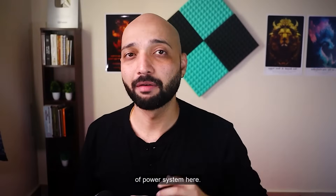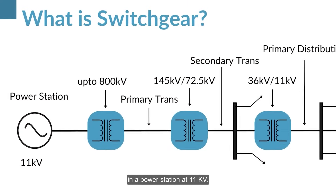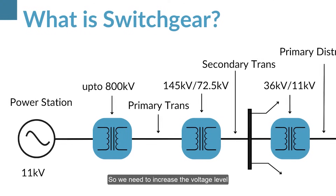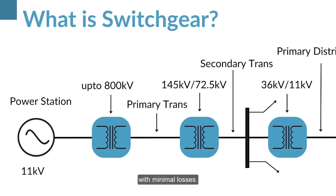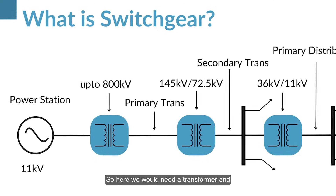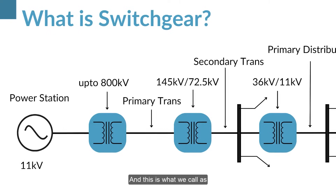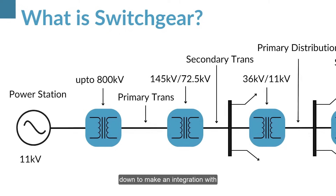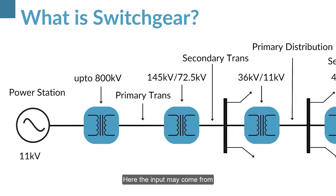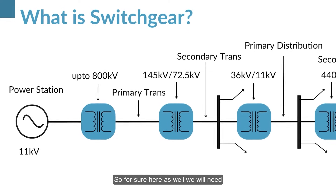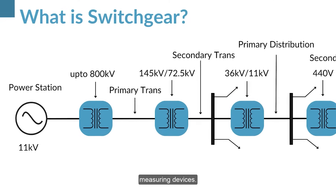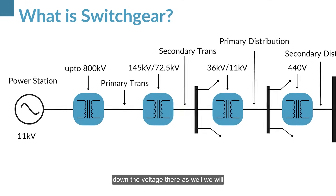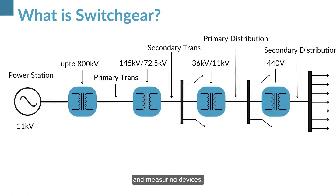Let's take one quick example of a power system. Let's say we are generating power in a power station at 11 kV. Now we need to transmit this power over a long distance, so we need to increase the voltage level so that the power can be transmitted with minimal losses. Here we would need a transformer and also some switching, protection, and measuring devices — this is what we call primary transmission. After that, the voltage will be stepped down to make an integration with the sub-transmission level, where inputs may come from multiple substations, so here as well we will need switching, protection, and measuring devices.